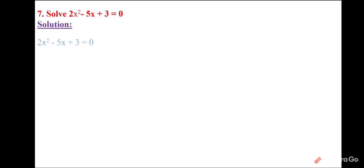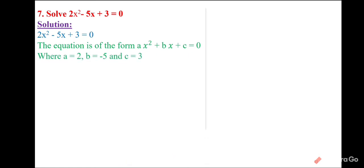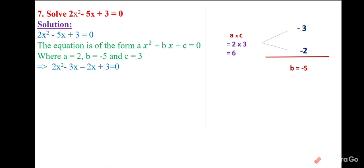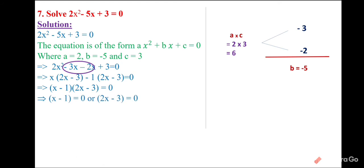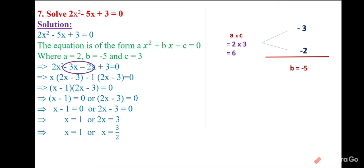Next question: 2x² − 5x + 3 = 0. Here a × c = 2 × 3 = 6 and b = −5. The pair −3 and −2 works: (−3)(−2) = 6 and (−3) + (−2) = −5. Grouping: x(2x − 3) − 1(2x − 3) = 0, so (x − 1)(2x − 3) = 0. Solutions: x = 1 and x = 3/2.